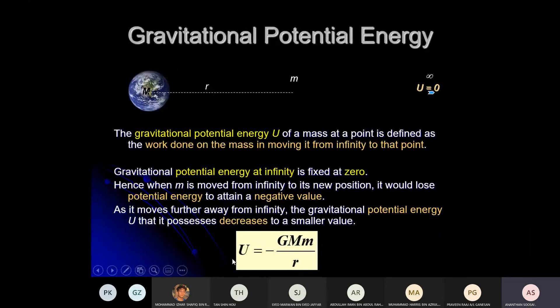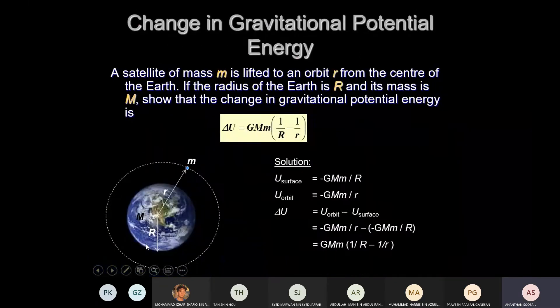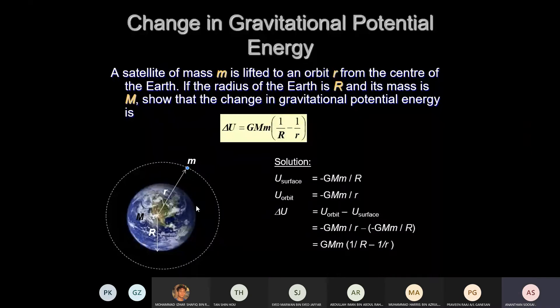So: negative GMm/r is potential energy; negative GM/r is gravitational potential. We'll come back to how both are linked later.